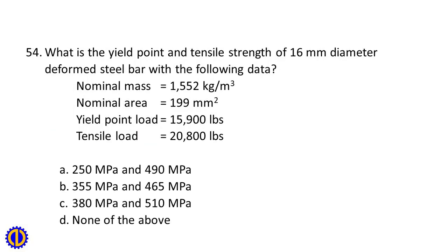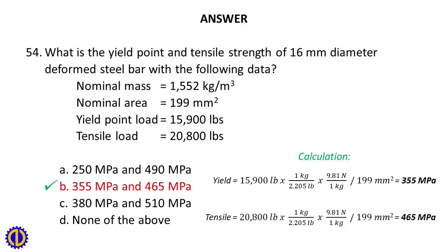Question 54: What is the yield point and tensile strength of a 16mm diameter deformed steel bar? Given: Nominal mass = 1.552 kg/m, Nominal area = 199 mm², Yield point load = 15,900 pounds, Tensile load = 20,800 pounds. A. 250 MPa and 490 MPa, B. 355 MPa and 465 MPa, C. 380 MPa and 510 MPa, D. None of the above. Answer: B. 355 MPa and 465 MPa.